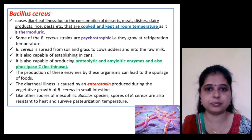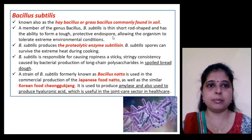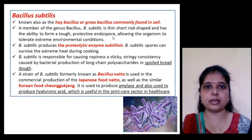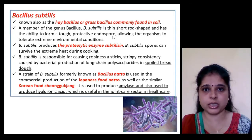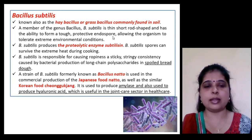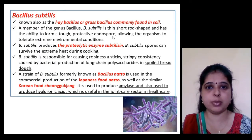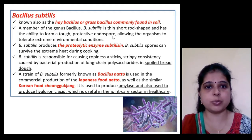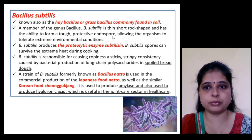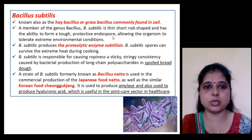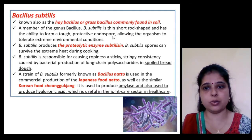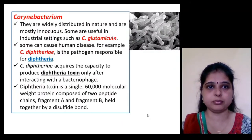Bacillus subtilis is also known as grass bacillus or hay bacillus, commonly found in soil. It produces a proteolytic enzyme called subtilisin, and its spores can survive extreme heat during cooking. It causes spoilage in bread dough. A strain of Bacillus subtilis known as Bacillus natto is used in the commercial production of Japanese food natto and a Korean food as well.